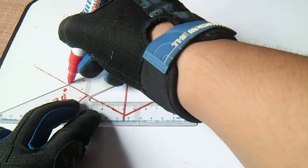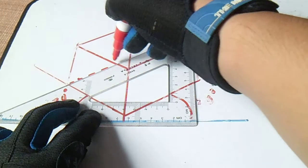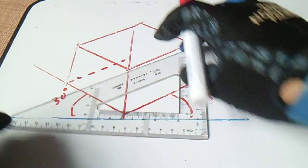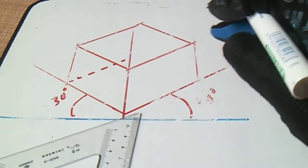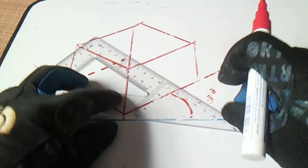And then put a hidden line here, and also another side.